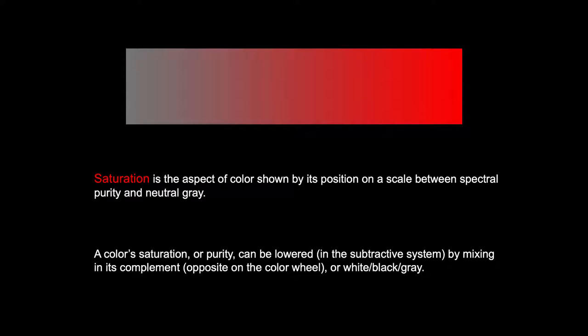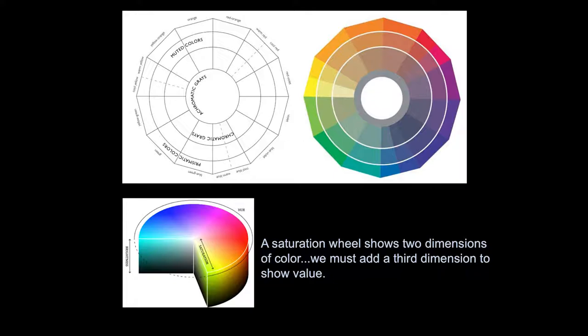Our third aspect is saturation. Saturation is the aspect of a color shown by its position on a scale between spectral purity and neutral gray. A color's saturation or purity can be lowered in our subtractive system by mixing in its complement, also by mixing in white, black, or gray.